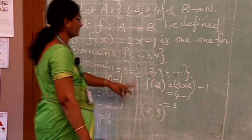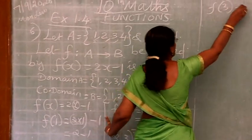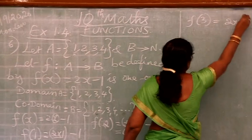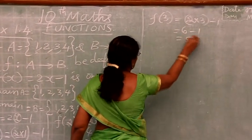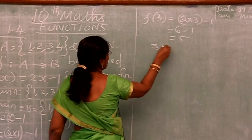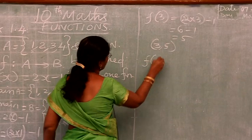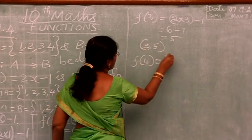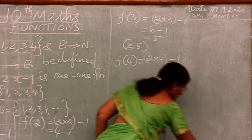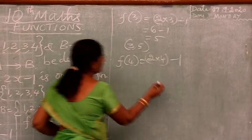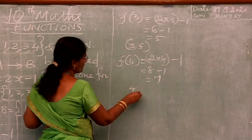So F of 3, 2 into 3 minus 1, which is 5. So 3 comma 5. Then F of 4, 2 into 4 minus 1, 8 minus 1 is 7. So 4 comma 7.